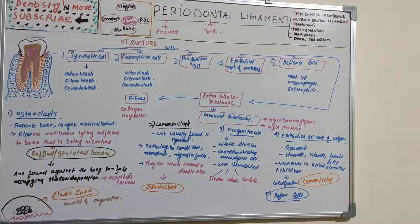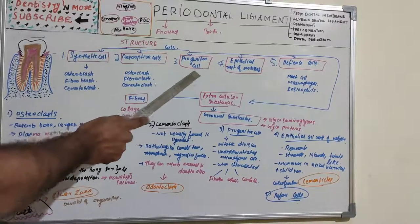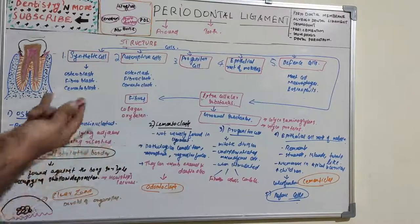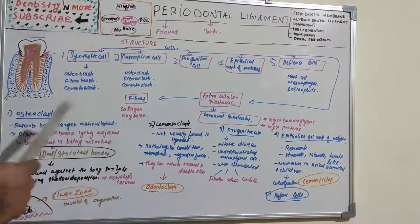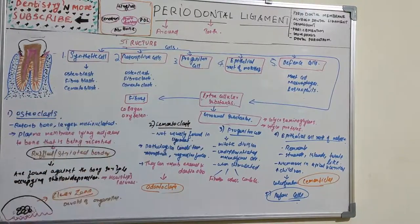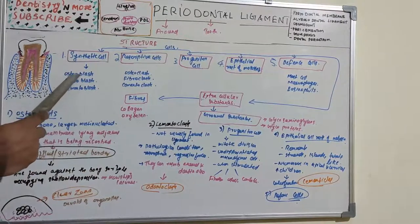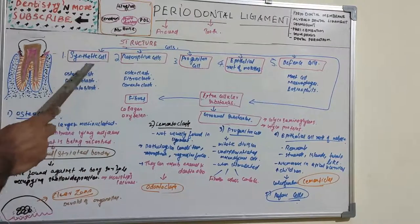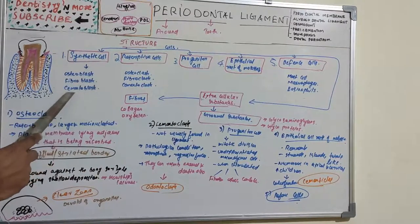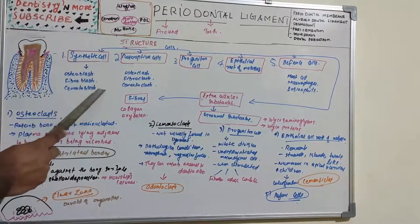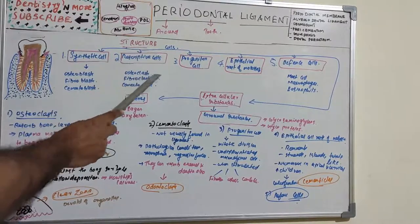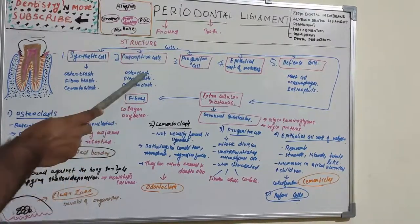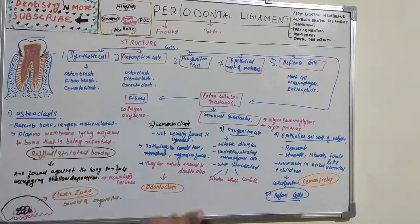Fibroclast is the cell which destructs fibers or collagen. To summarize: osteoblast creates bone, fibroblast creates collagen, cementoblast creates cementum; osteoclast destructs bone, fibroclast destructs collagen, and cementoclast destructs cementum.